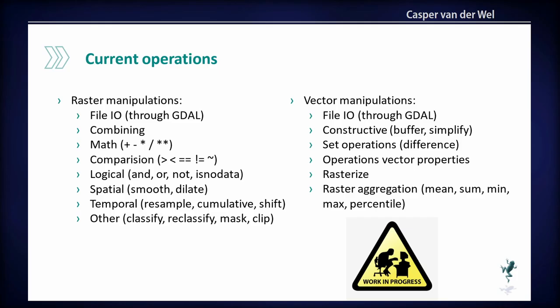Currently, the way this is implemented is that each operation needs to have a class in Dask Geomodeling. So it's actually a lot of work in aggregate, but not a lot of work per operation because the classes are very small. These are the things we implemented because we needed them. But it's very extensible — you can just subclass this base class in your own package and make whatever you want to do. How to do it is in the documentation.